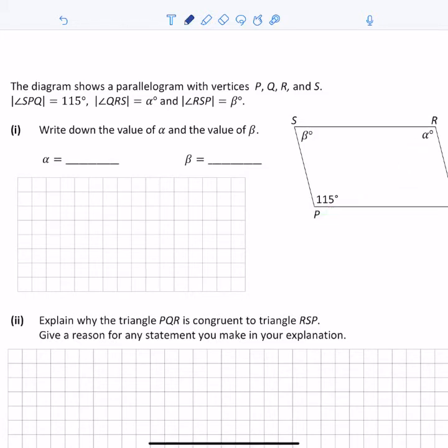The sum of internal angles in a quadrilateral is always 360 degrees. So 2×115° + 2β = 360°, recognizing that opposite angles in a parallelogram are equal. Simplifying: 2β = 360° - 230°, so 2β = 130°.